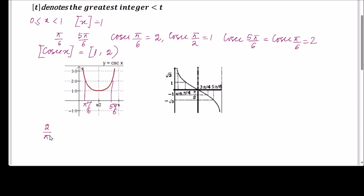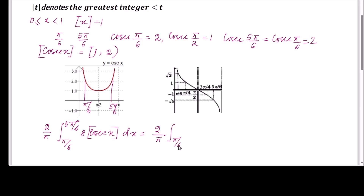For the first part, we write (2/π) times the integral from π/6 to 5π/6 of 8·[cosec x] dx. Since [cosec x] = 1, this becomes (2/π) times the integral from π/6 to 5π/6 of 8·1 dx. Taking 8 outside, we get (16/π) times [x] evaluated from π/6 to 5π/6.